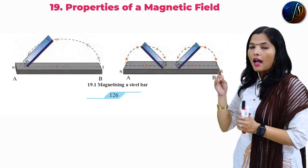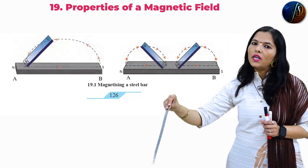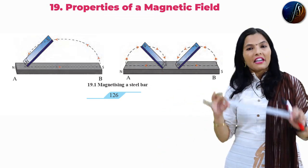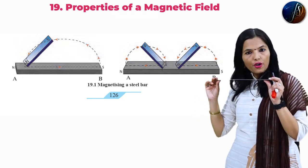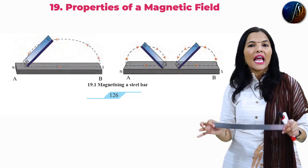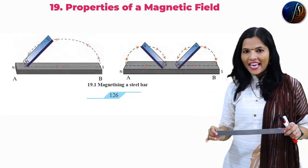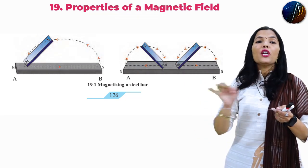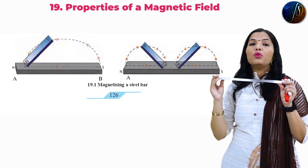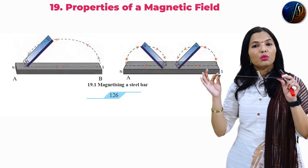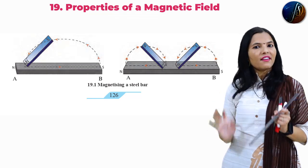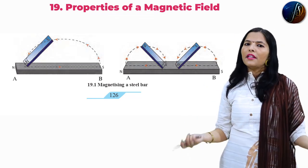Then again take the steel bar and move it towards the iron filings — and the iron filings get stuck and get attracted towards the steel bar. This means that by using two bar magnets, dragging 15 to 20 times from the central position, we produce magnetism in the steel bar.